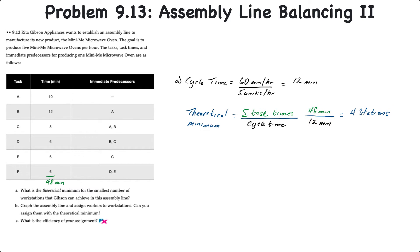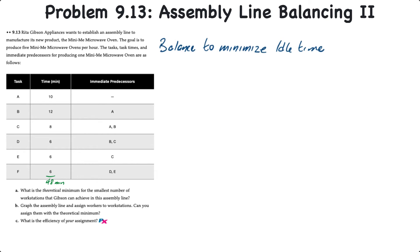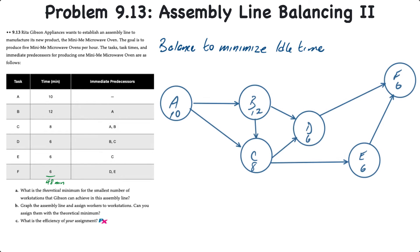Now let's see if we can balance the line to achieve that theoretical minimum. The approach we're going to take is to try to minimize the amount of idle time in a particular workstation. If we draw the assembly line, it should look something like this.